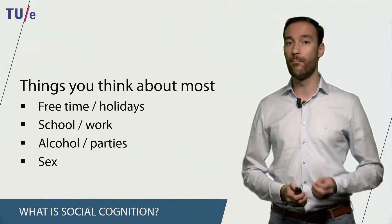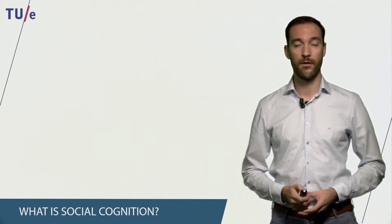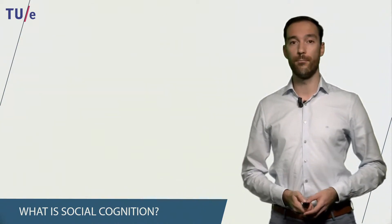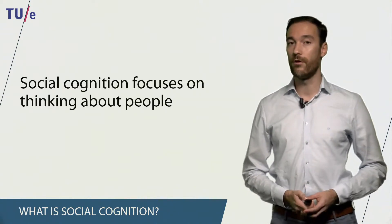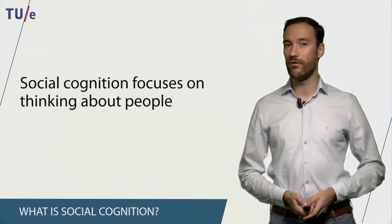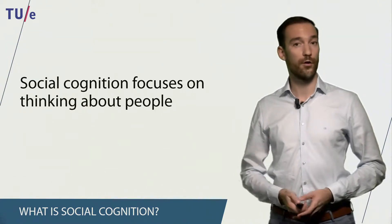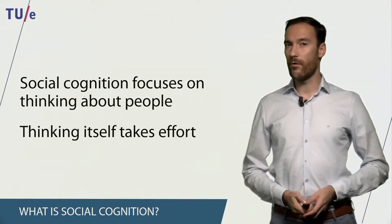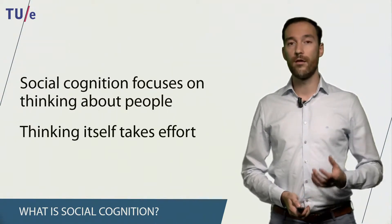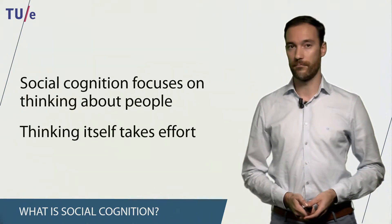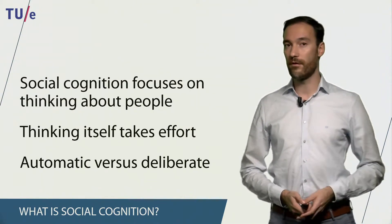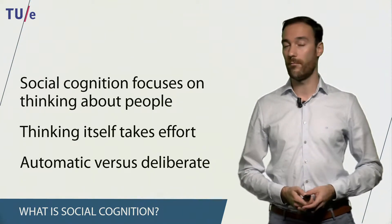There is however one thing that we think about more often than all of these things combined, and this gives us the answer to the question: what is social cognition? The thing we think about the most is other people. Therefore, social cognition focuses on thinking about people. Just turn on the TV at a random moment and you are likely to see one or more people talking about one or more other people. We humans, however, don't really like thinking a lot, because thinking takes effort. That is why we are referred to as cognitive misers. This is one of the reasons why we rely a lot on the automatic system, which you may remember from a previous lecture.